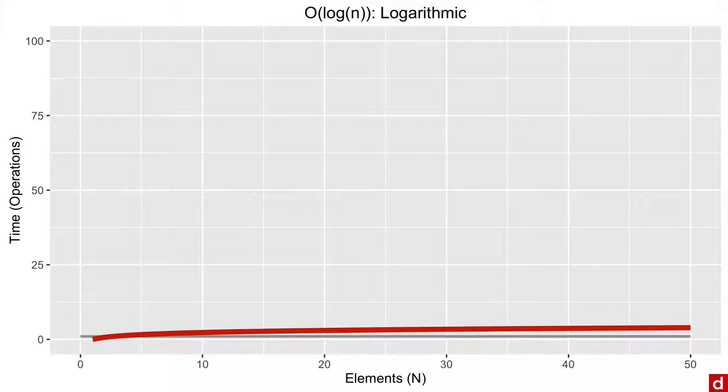Up from that is logarithmic, where you take the number of operations, you get the logarithm of that. And you see it's increased, but it's really only a small increase. And it tapers off really quickly. So an example is finding an item in a sorted array, not a big deal.